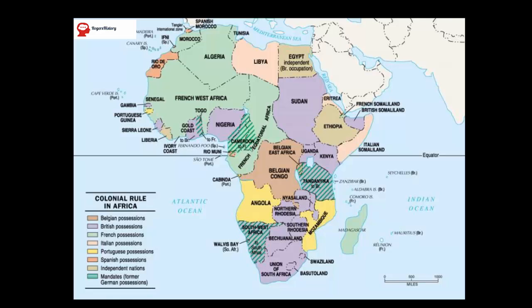As Africa was colonised, more and more tensions between the great powers over Africa typified that period, from 1880 through to about 1914 — the start of World War One. Most of those tensions, or in fact all of those tensions, were solved without major conflict between the great powers.